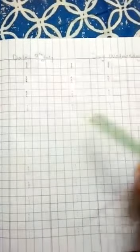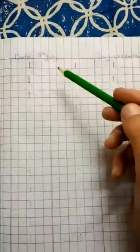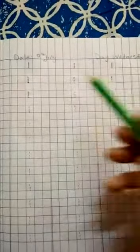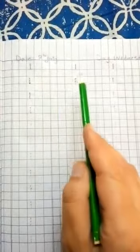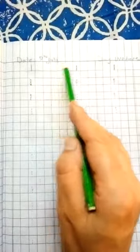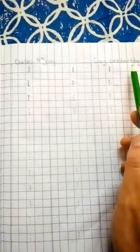First you will draw two margin lines and then draw two lines. Make three columns: one, two, three. Date: 8th July. Day: Wednesday.